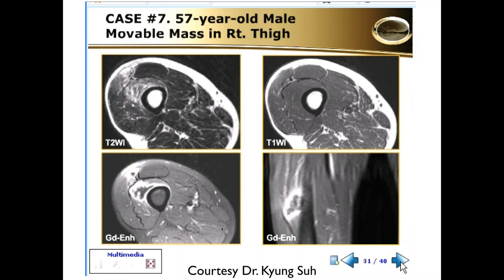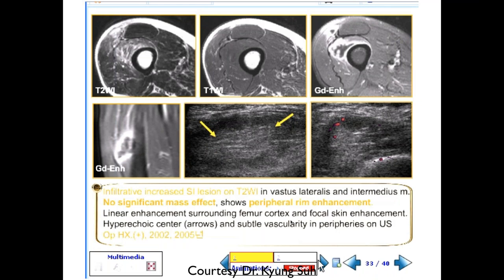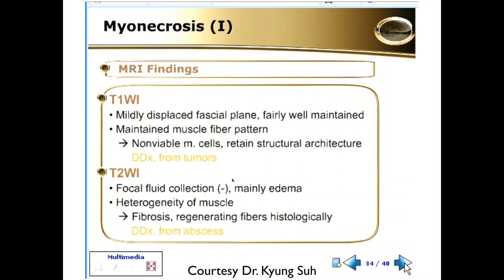A 57-year-old male with a movable mass in the right thigh. There's a fluid collection anterior to the femur — could be a hematoma from a contusion — with a little peripheral enhancement. On ultrasound, it appears isoechoic with minimal vascularity on the periphery and a little hyperechoic area internally. This was myonecrosis, and ultrasound can help differentiate it from an abscess, as can T2 signal.